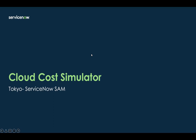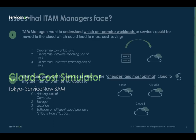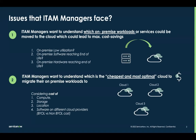Now let's understand the major issues being addressed by this feature. iTime managers want to understand which on-premise workloads could be moved to the cloud and would lead to maximum cost savings. They want to understand if there are any on-premise low utilization servers, any on-premise softwares reaching end of life, or any on-premise hardware reaching end of life on which there are virtual machines — and if those virtual machines are moved to the cloud, it could lead to maximum cost savings.